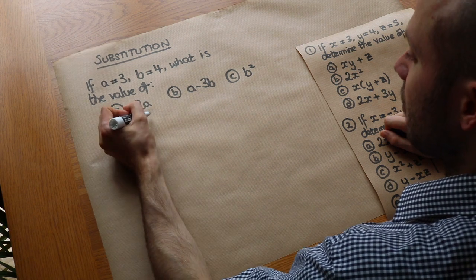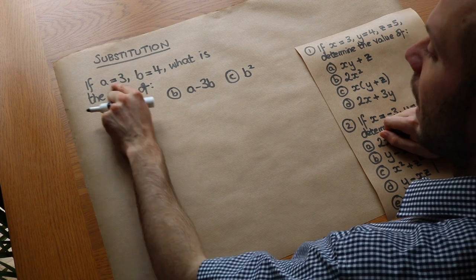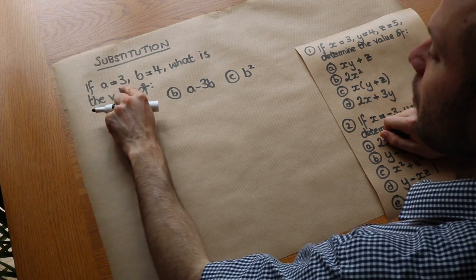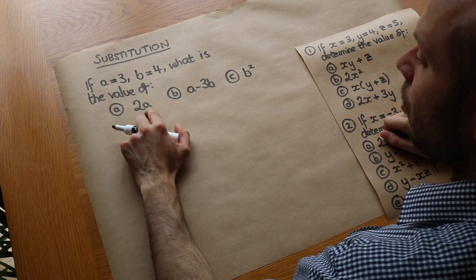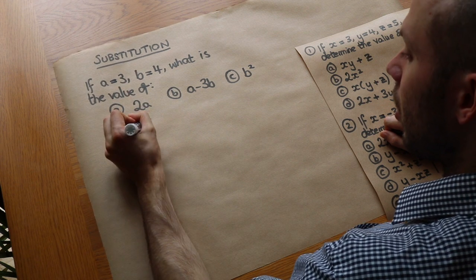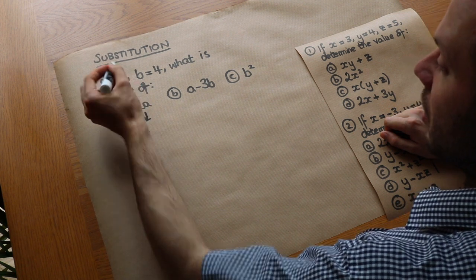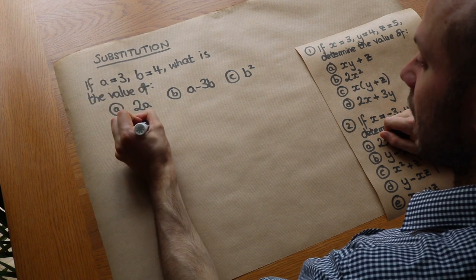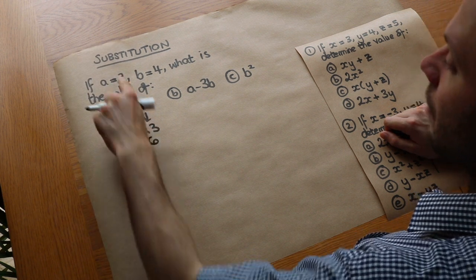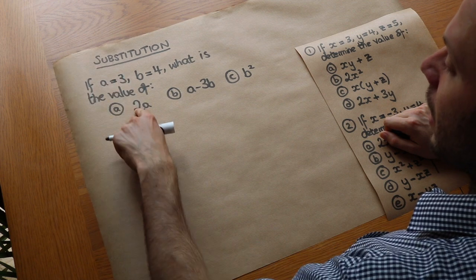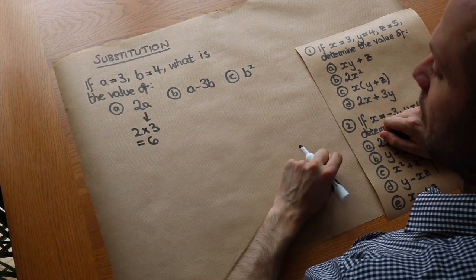Let's do a quick example. If we had 2a and the value of a was 3, what does 2a mean? Well, it means two lots of a, i.e. 2 times a, which is 3, because we said a was 3, and that would be 6. So if a is 3, then 2a has a value of 6.